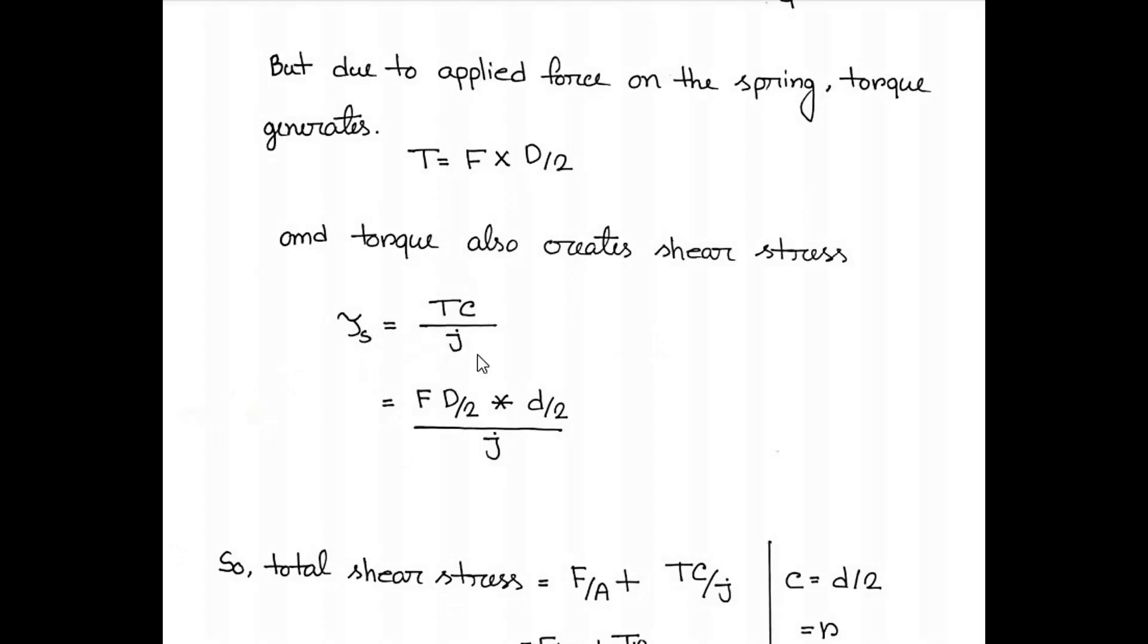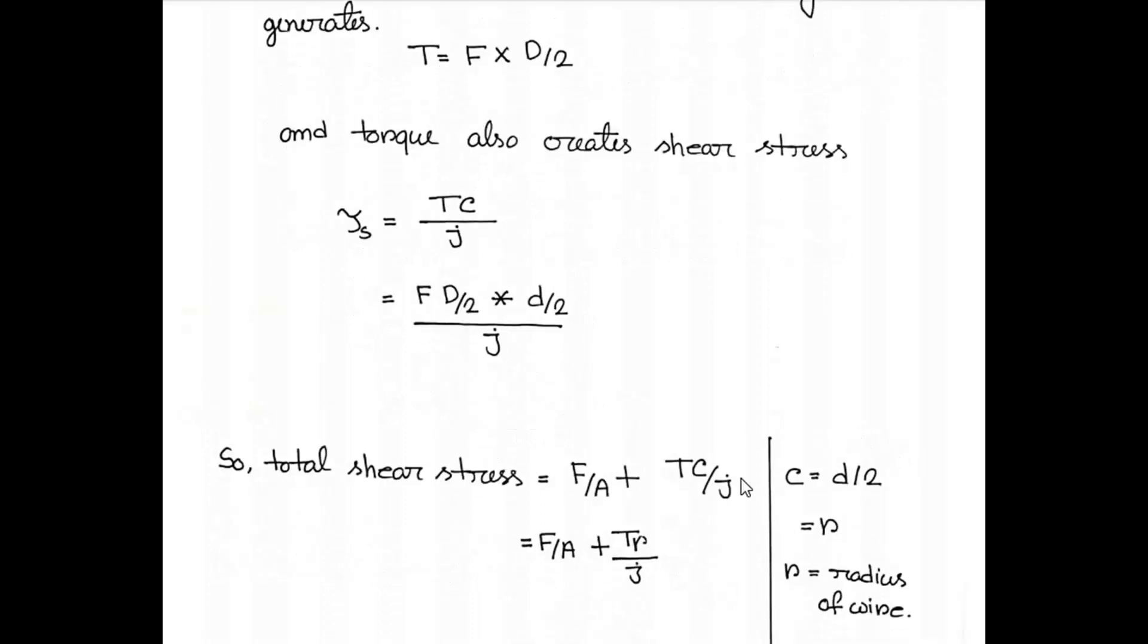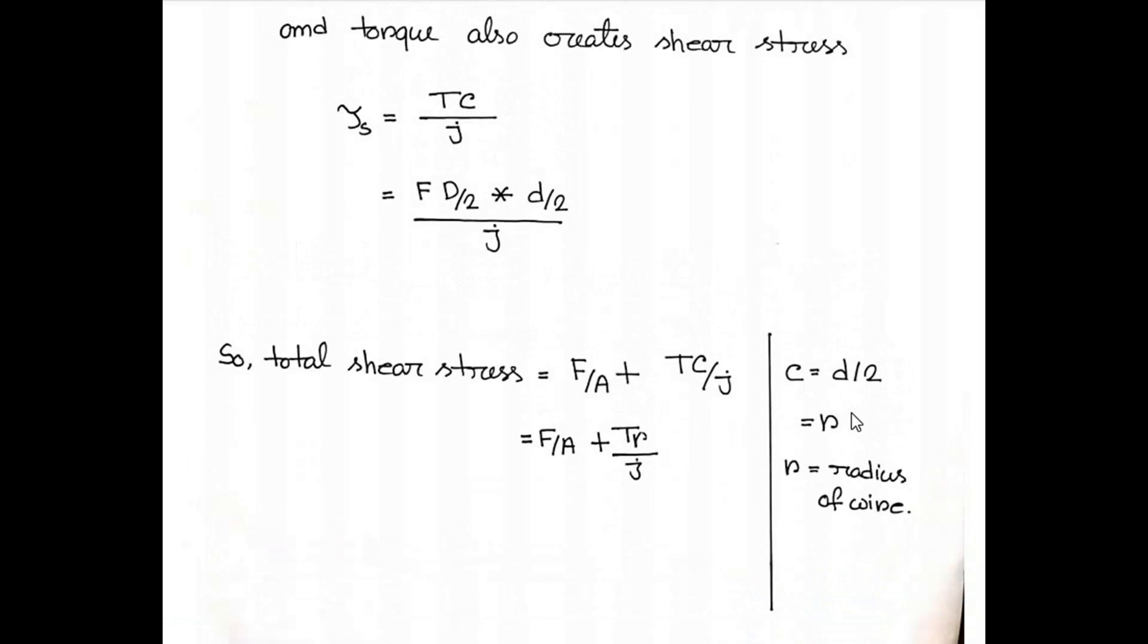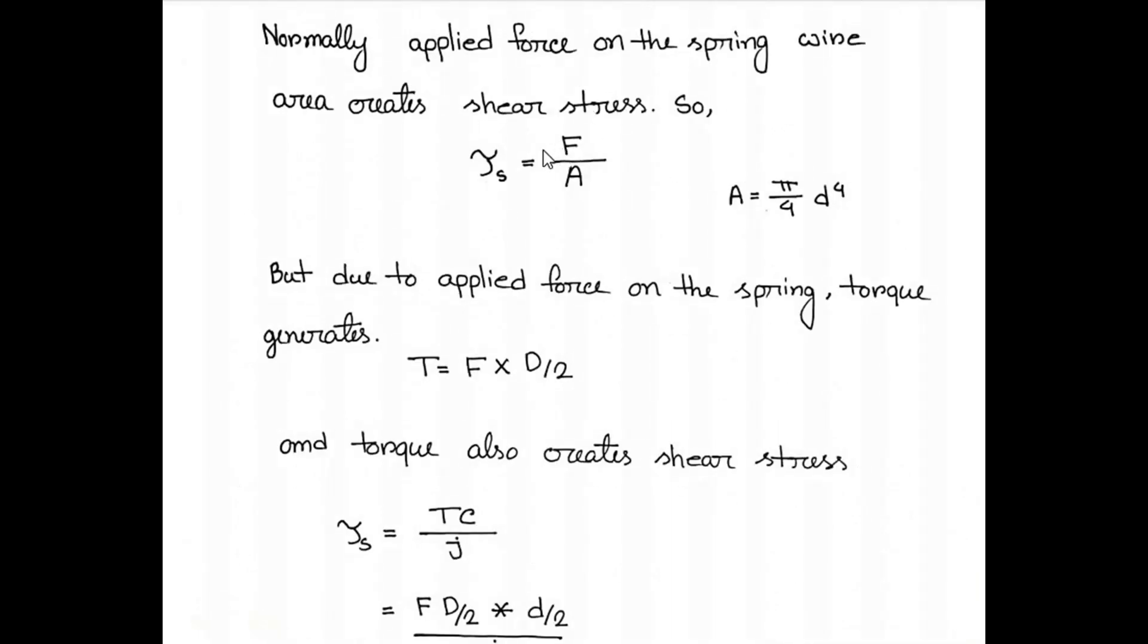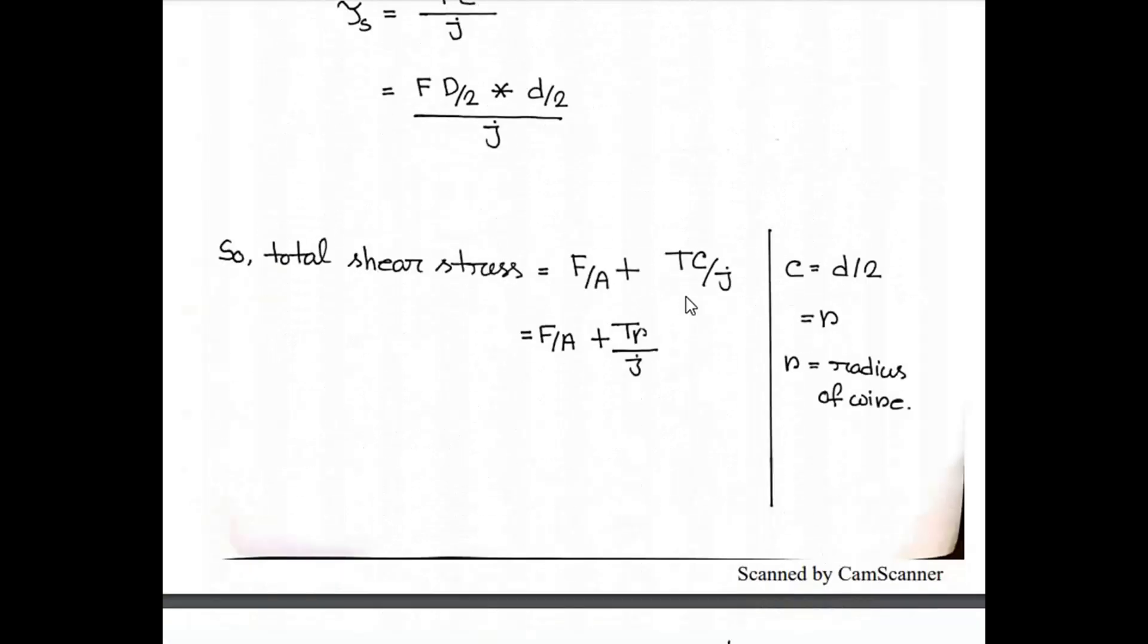Torque also creates shear stress, so shear stress equals torque times C by J. We can write C as small d by 2, which is the diameter of the wire, or as r. J is the polar moment of inertia. We calculate the total shear force as F by A plus TC by J.